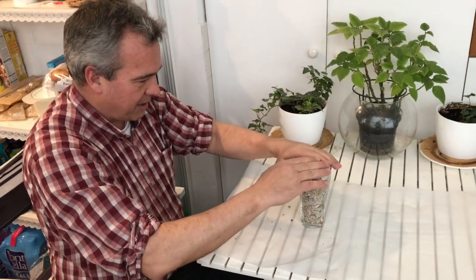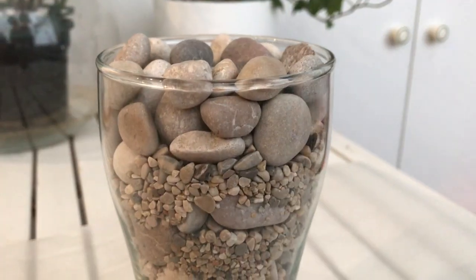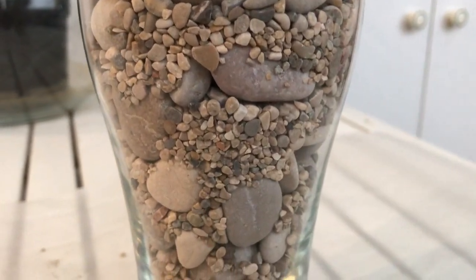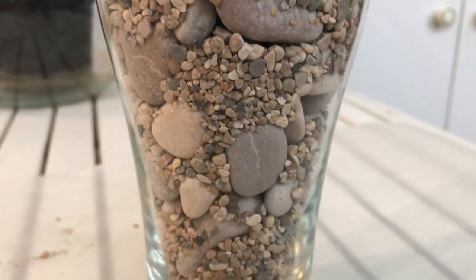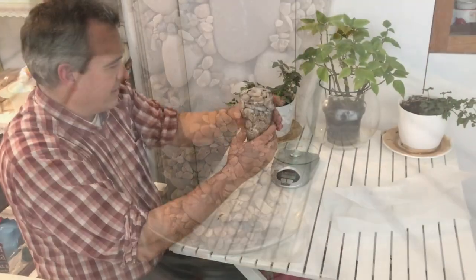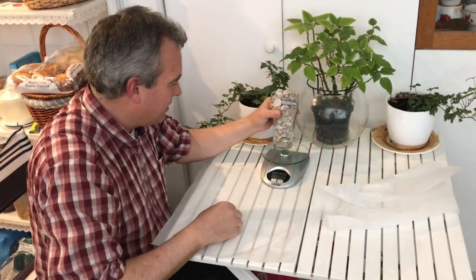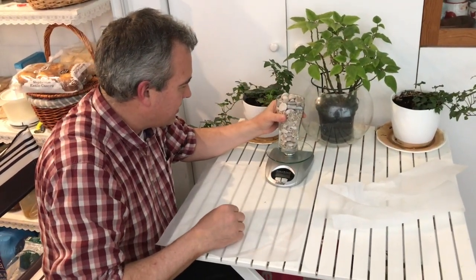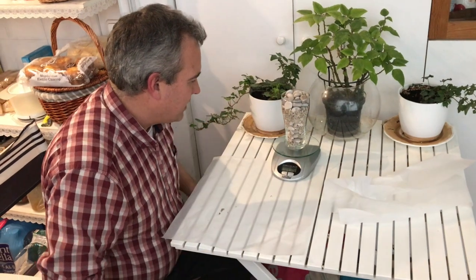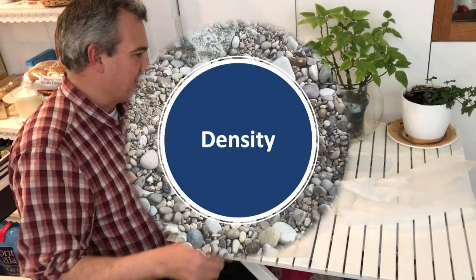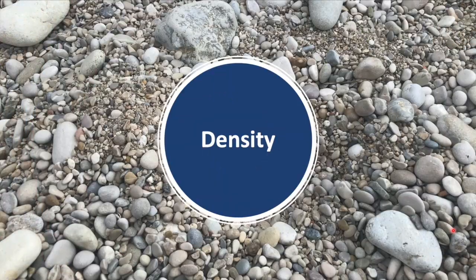Our sample is a poorly sorted sandy gravel composed mostly of limestone particles. Let's see how much it weighs. The weight is 1.419 kilograms. Let's calculate the density of our sandy gravel.